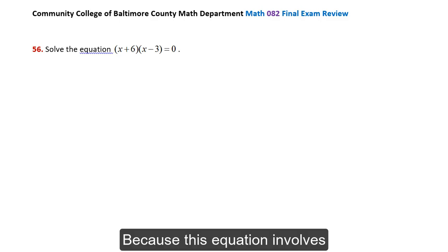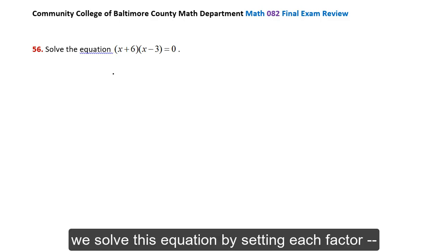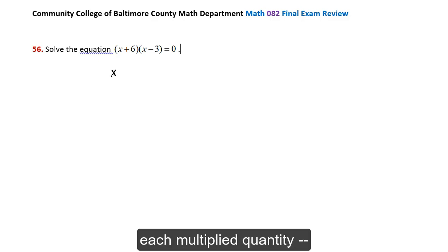Because this equation involves multiplied quantities specifically set equal to 0, we solve this equation by setting each factor, each multiplied quantity, equal to 0.